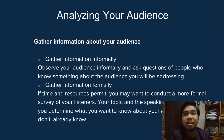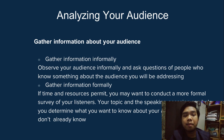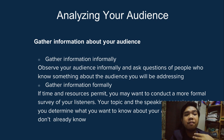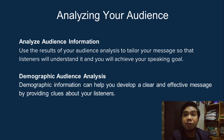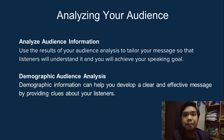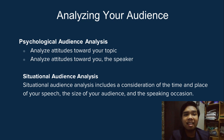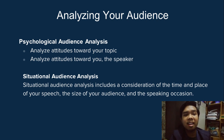The second chapter is analyzing your audience. Gather information about your audience both informally and formally. Informally, observe your audience and ask questions of people who know something about the audience you will be addressing. Formally, if time and resources permit, conduct a more formal survey of your listeners. Use the results of your audience analysis to tailor your message so that listeners will understand it and you will achieve your speaking goals. Demographic audience analysis can help you develop a clear and effective message by providing clues about your listeners. Psychological audience analysis examines attitudes towards your topic and towards you, the speaker. Situational audience analysis includes consideration of the time and place of your speech, the size of your audience, and the speaking occasion.